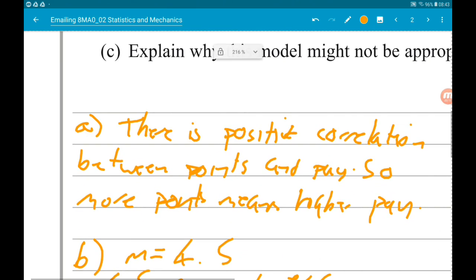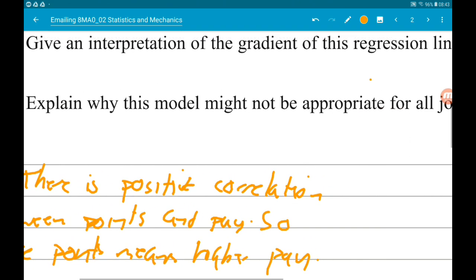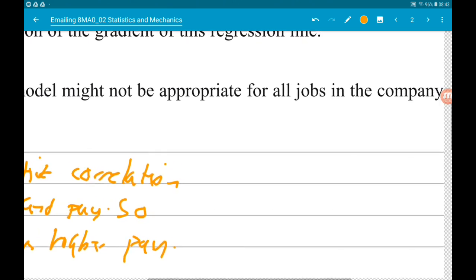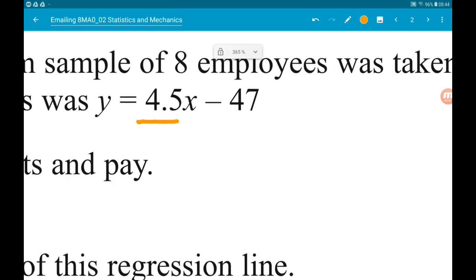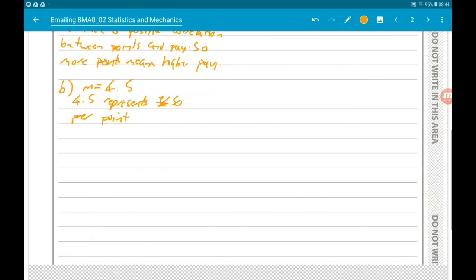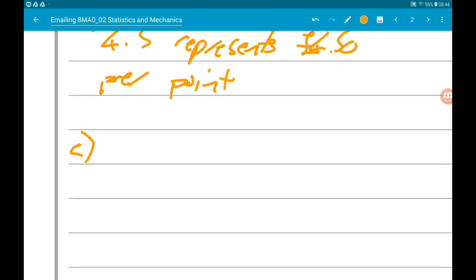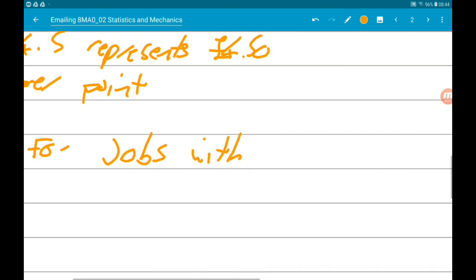And then part C wants us to explain why this model might not be appropriate for all jobs in the company. So the problem that could happen here is that we have a minus 47. So for jobs, we could work out how many points. So 10 times 4.5 is 45. So 11 times 4.5 is 49.5. So for jobs with under 11 points.